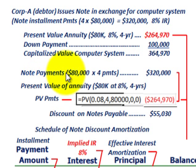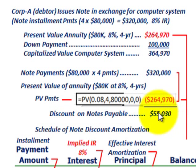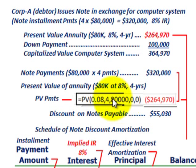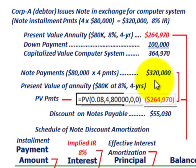Starting with the notes payable, we have four payments of $80,000, totaling $320,000 in cash payments. To determine the discount on the notes payable, we take the present value of those annuity payments — $80,000 at 8% over four years — using a financial calculator or Excel. Discounting those $80,000 annuity payments back at 8% over four years gives a present value of $264,970. Comparing the note payments of $320,000 to their present value of $264,970, we get a discount on notes payable of $55,030.